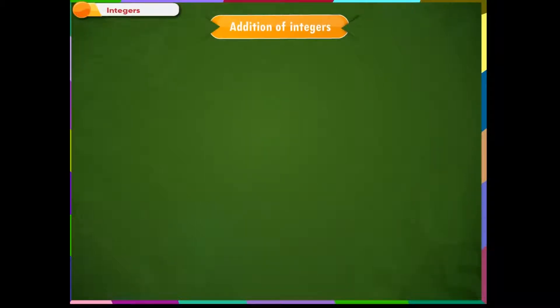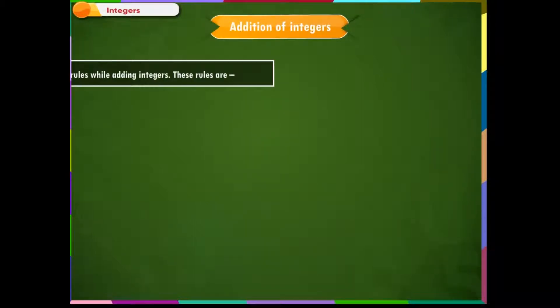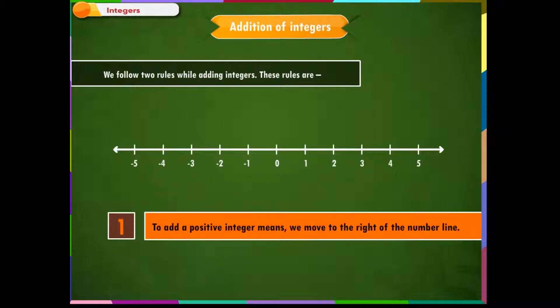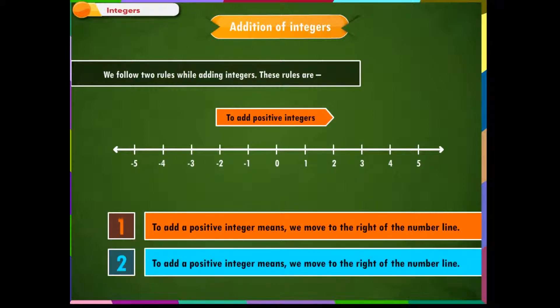Addition of integers. We follow two rules while adding integers. Rule 1: To add a positive integer means we move to the right of the number line. Rule 2: To add a negative integer means we move to the left of the number line.